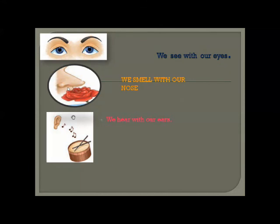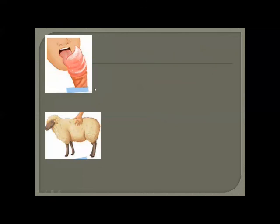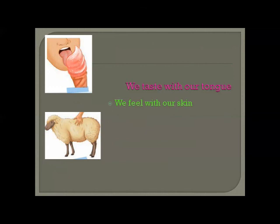We hear with our ears - we can hear sounds with the help of our ears. Then, tongue - we taste with our tongue. Whether it is tasty or spicy, we can taste our food with the help of our tongue. Then we feel with our skin - if we touch something and it is hot or cold, we can feel it with the help of our skin.